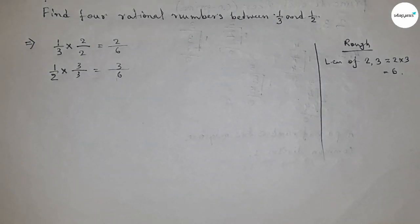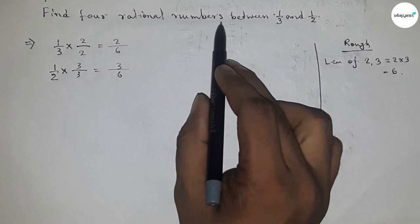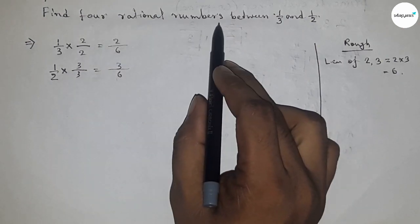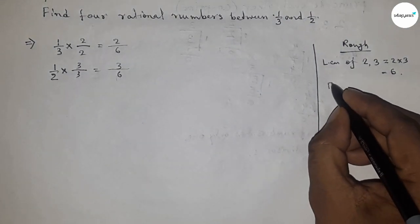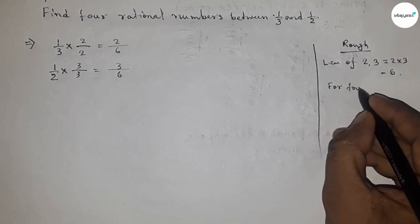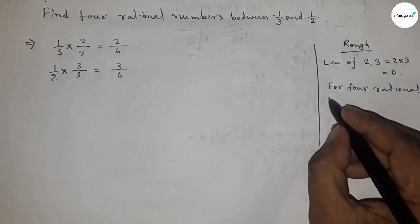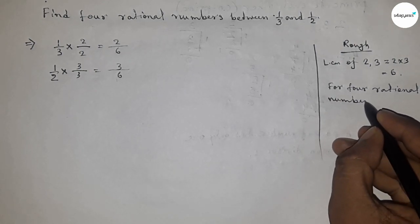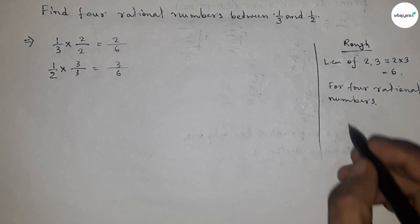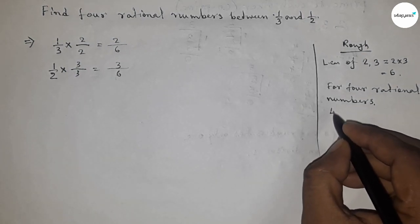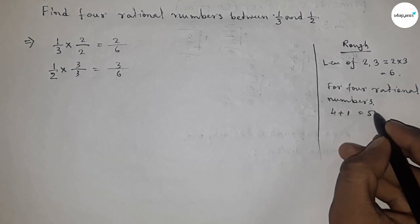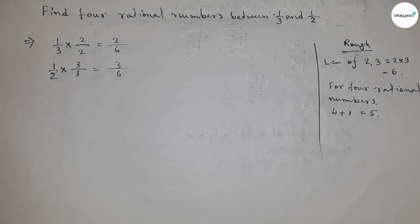Now we have to find four rational numbers. Here an important thing is that for four rational numbers, we have to multiply by 4 plus 1, which equals 5. Keep this in mind.